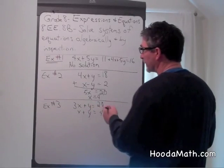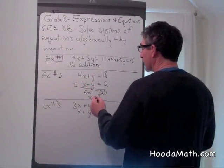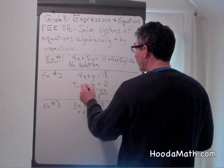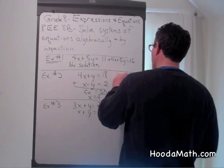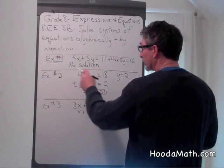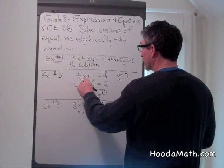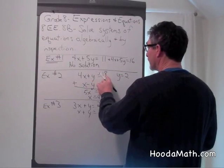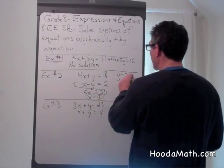Now to find out what y is, we can substitute in either of these. So if x minus y equals 2, 4 minus some number equals 2, we know y equals 2. To check if our answer is correct, substitute in the first equation. 4 times 4 equals 16 plus 2 equals 18. So we know we are correct. x equals 4 and y equals 2.